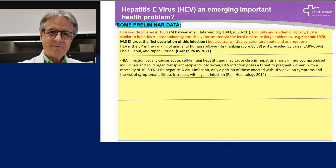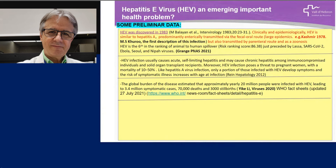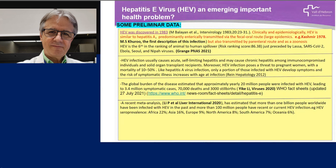Only a portion of those infected with hepatitis E virus develop symptoms, and the risk of symptomatic illness increases with the age of infection. The global burden of this disease is estimated at approximately 20 million people infected yearly, leading to more than 3 million symptomatic cases. More than 1.8 billion people in the world population have been infected with hepatitis E in the past, and more than 100 million people have had recent infection. With very high average prevalence all over the world: Africa 20%, Asia 60%, Europe 9%, North America 8%, South America 7%, Oceania 6%.